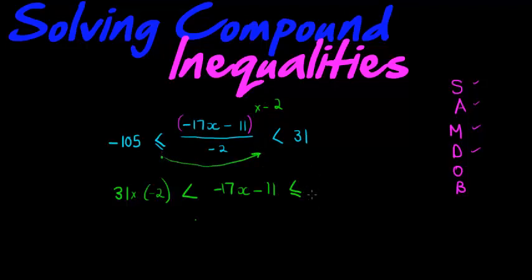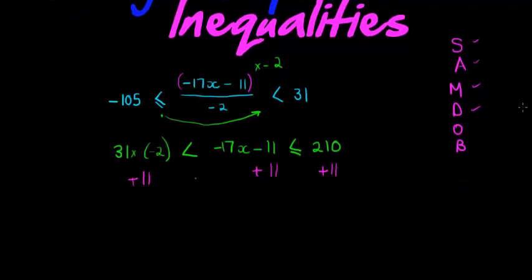And it's times negative 2, which does that give me 210, is it? Okay, 210 good. Now I am going to add the 11, add the 11 every, both sides as well as in the middle, or in the middle as well as both sides.